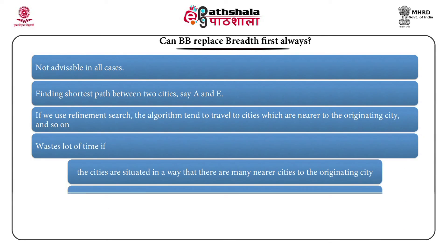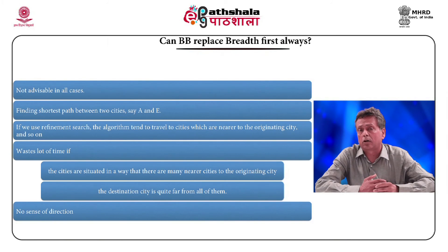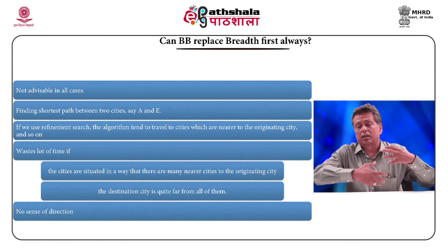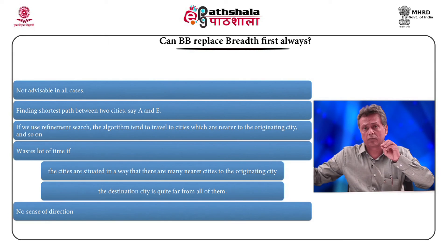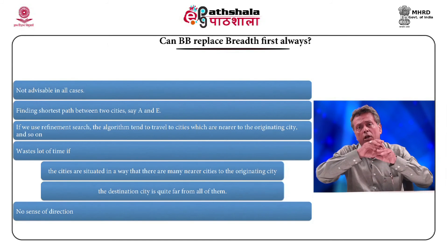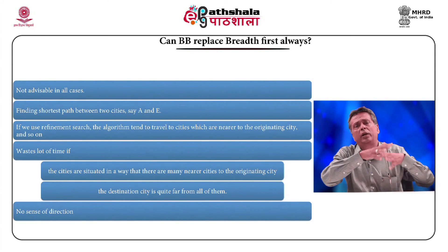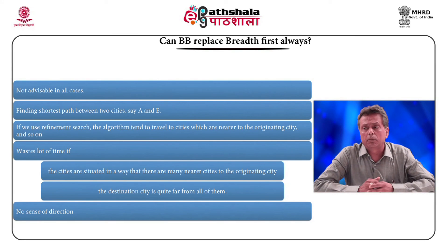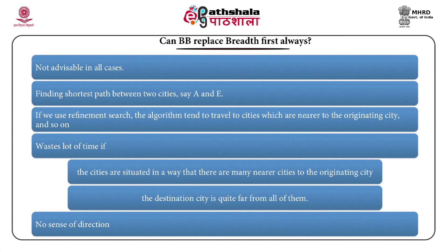One may ask: should we replace breadth-first search with branch and bound in all cases? No. Sometimes the starting node is far from the ending node, with many surrounding nodes nearby. In that case, breadth-first search finds the solution faster. Branch and bound, however good, lacks a true sense of direction — that can only come from a good heuristic. Without a good heuristic, branch and bound may converge slowly.